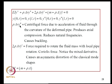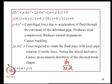The term rho·A·V²·Y'' represents centrifugal force due to the acceleration of fluid through the curvature of the deformed pipe; it produces axial compression, which reduces natural frequencies and can cause buckling. The term 2·rho·A·V·Y-dot' — where Y-dot' is ∂²Y/∂X∂T, a mixed derivative — is the Coriolis force required to rotate the fluid mass with local pipe rotation. This mixed derivative causes an asymmetric distortion of the classical mode shapes, so sine(nπX/L) will not be the exact mode shape.